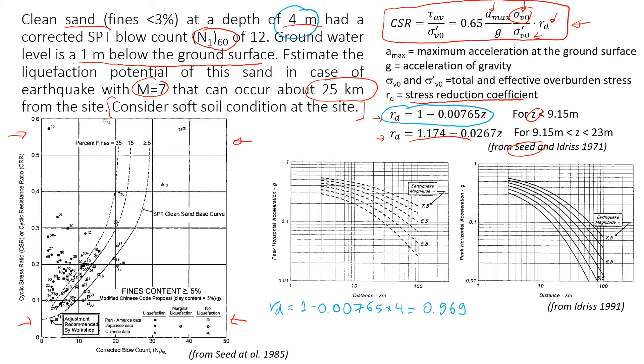Okay, so we found this. Now we're going to find maximum peak acceleration at the surface. To do that we're going to look at these two charts proposed by Idris in his work in 1991. So this one is for soft site conditions and this one is for rock site conditions. In our case we have soft soil condition so we're going to use this chart.